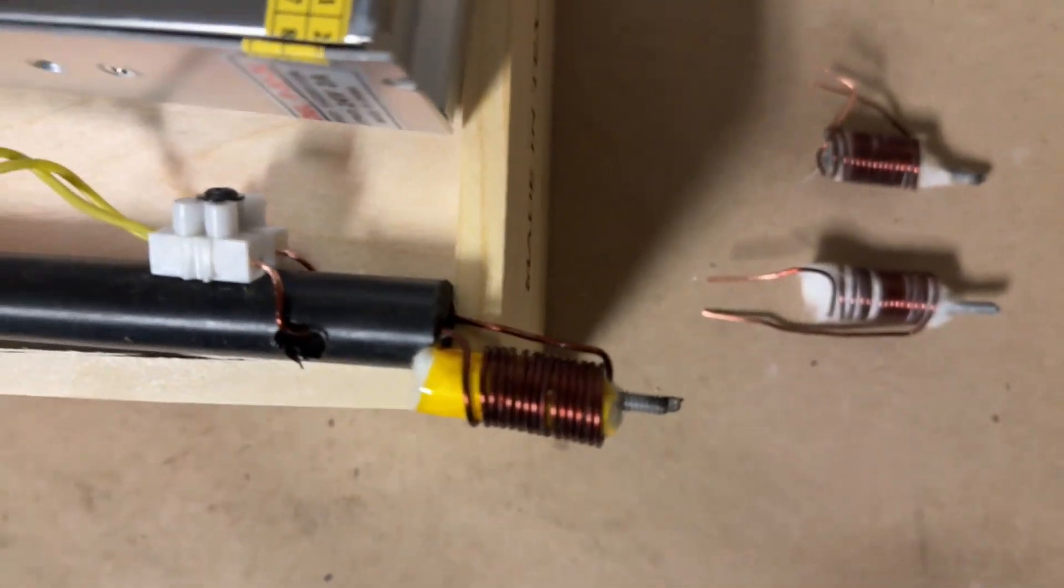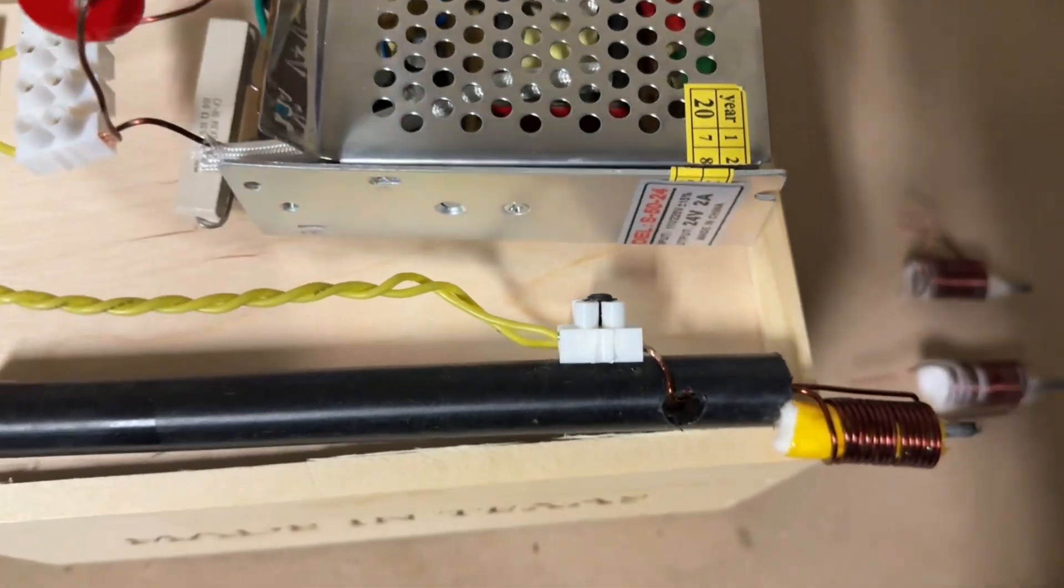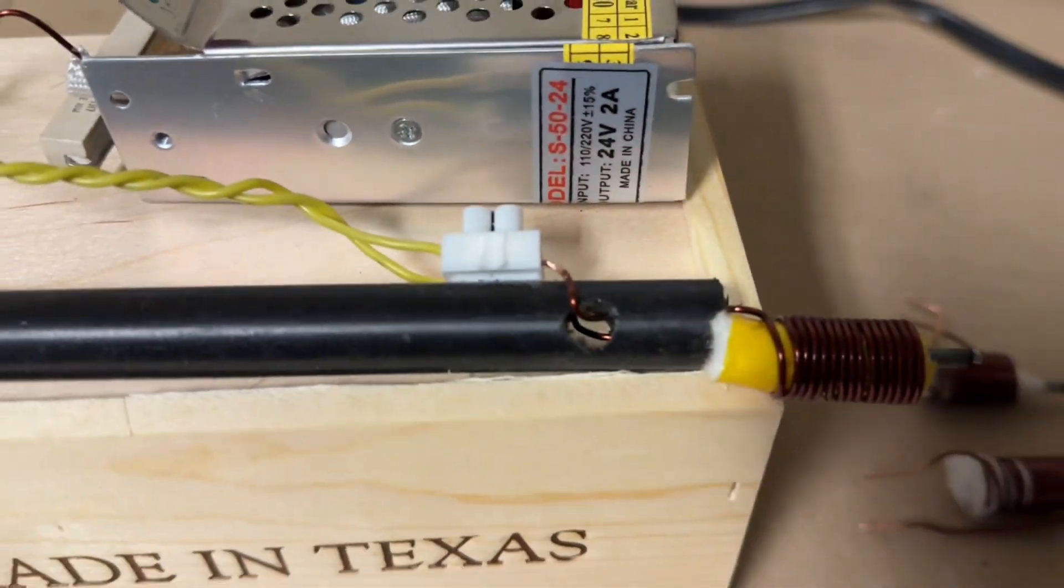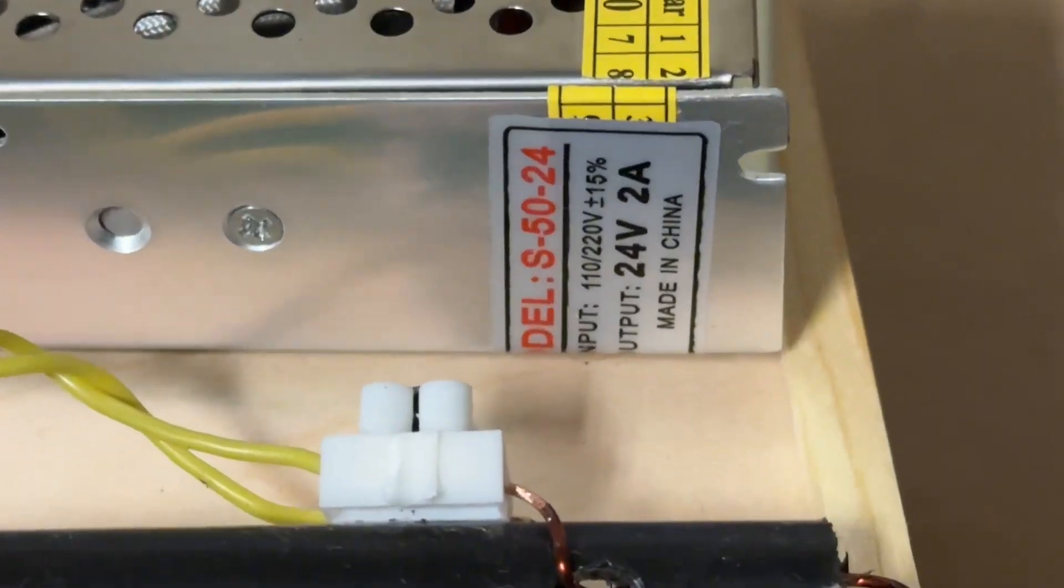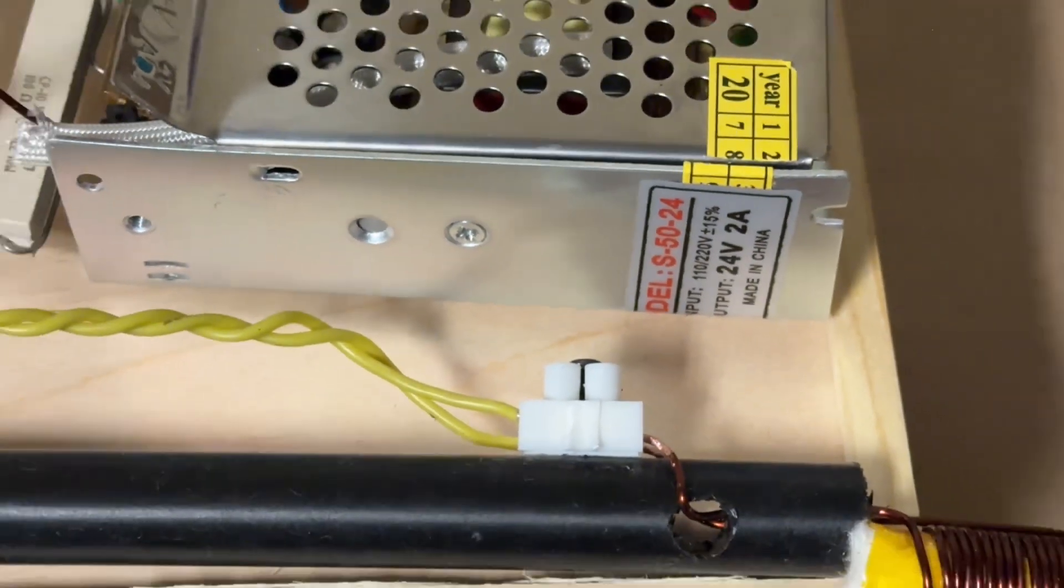Hi folks and welcome back. In this video I'm going to show you how to make an induction soldering iron that can heat up very quickly using a 24 volt 2 amp switch mode power supply and modifying the power supply in such a way